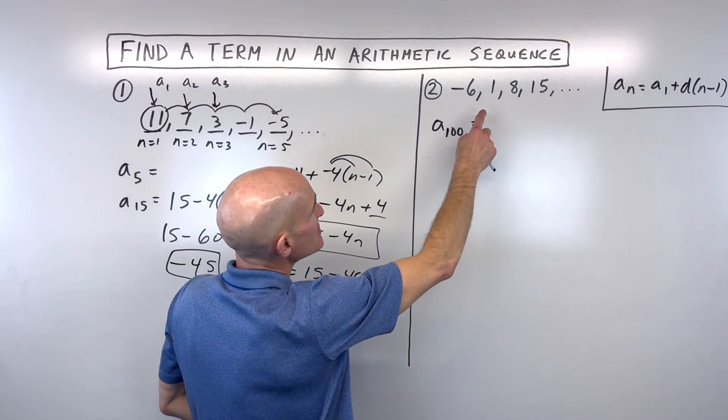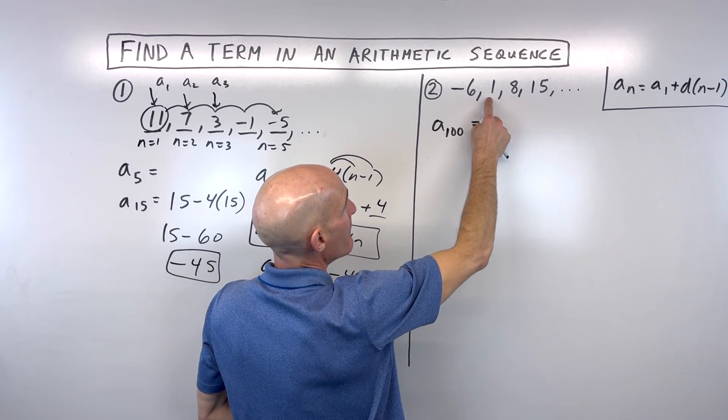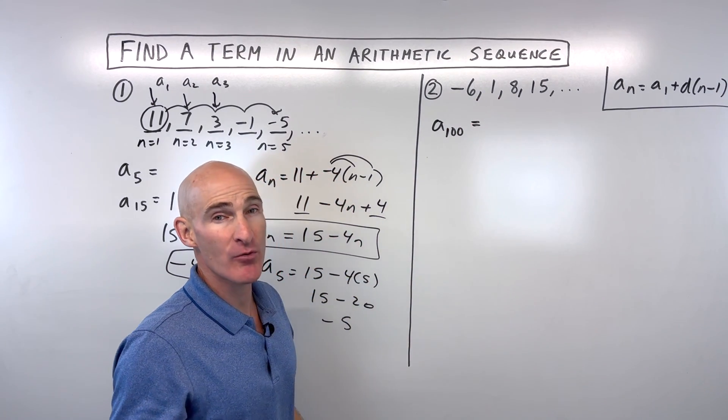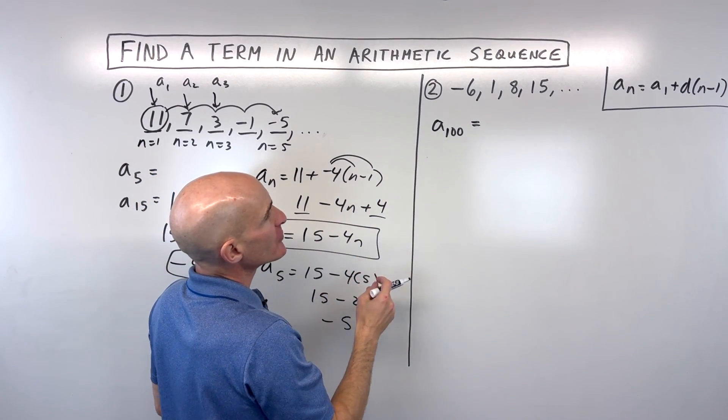And that's what's called our common difference or our d value. Now, the reason they call it the difference is because if you do 1 minus negative 6, you get 7. Or 8 minus 1 to subtraction or minus, that's the difference, right?